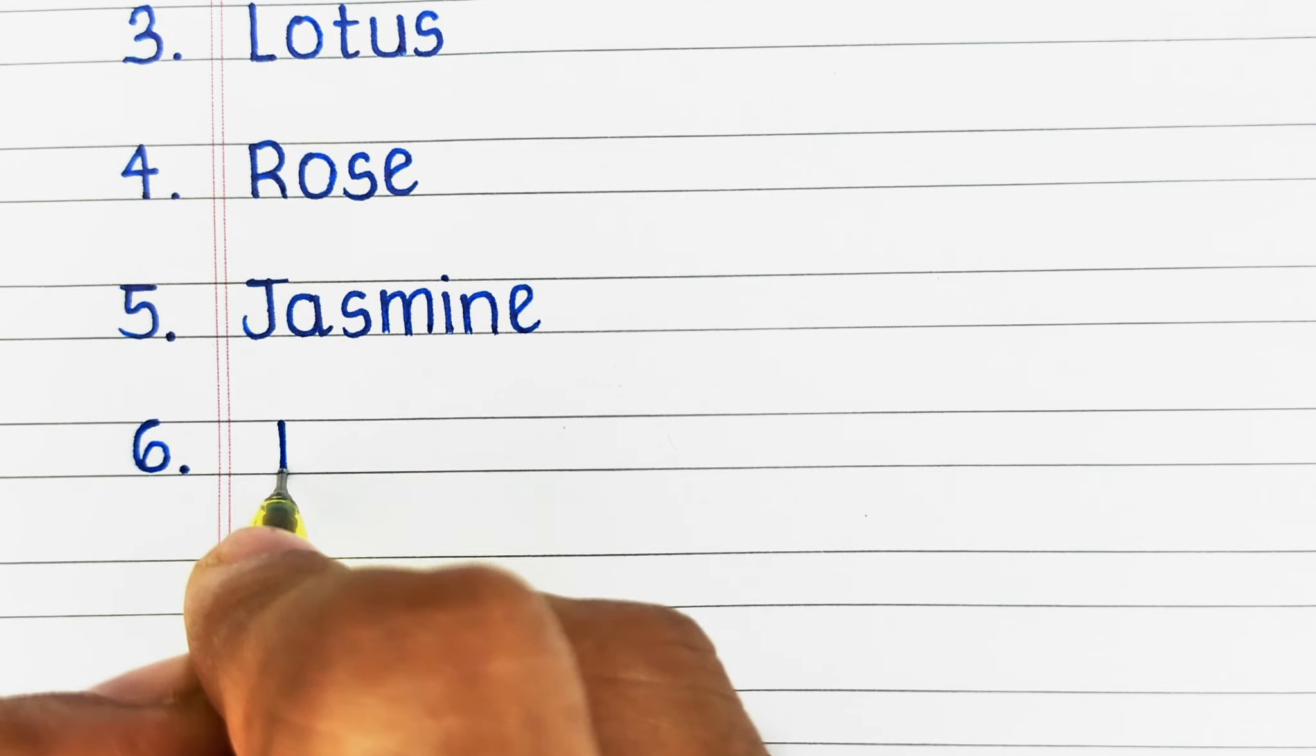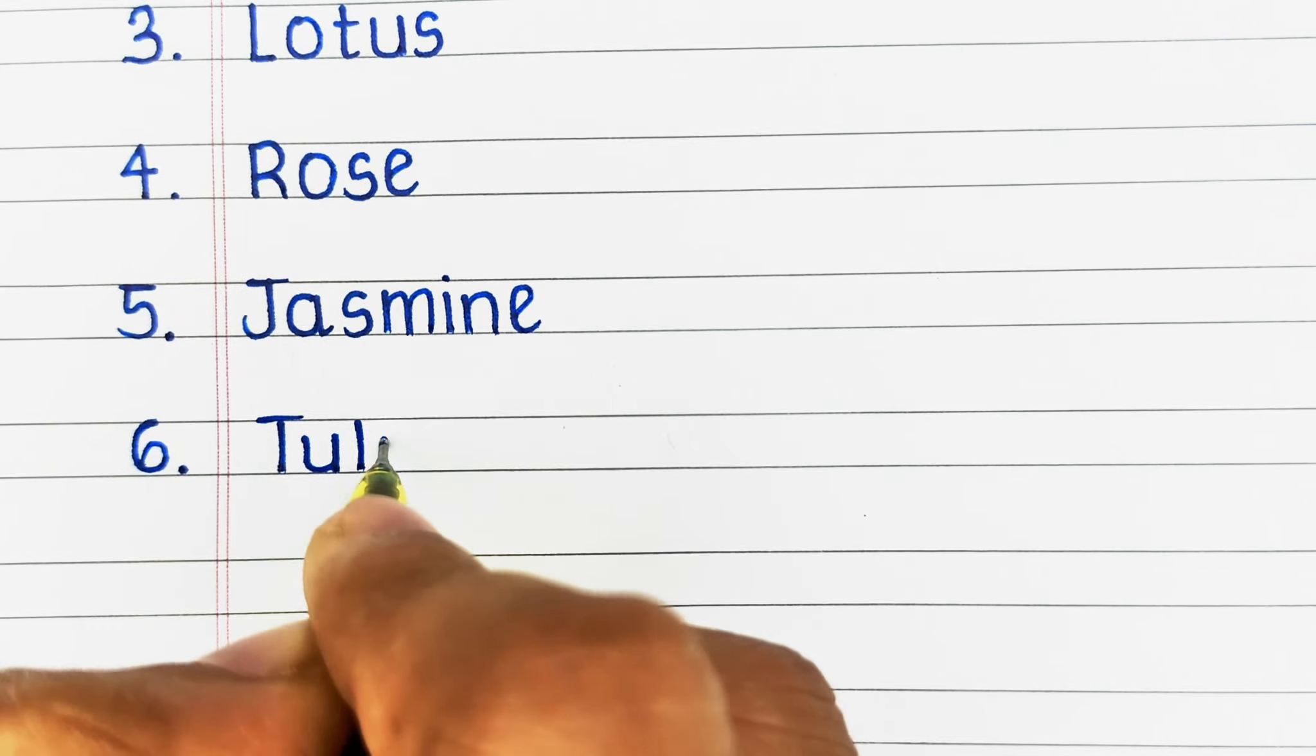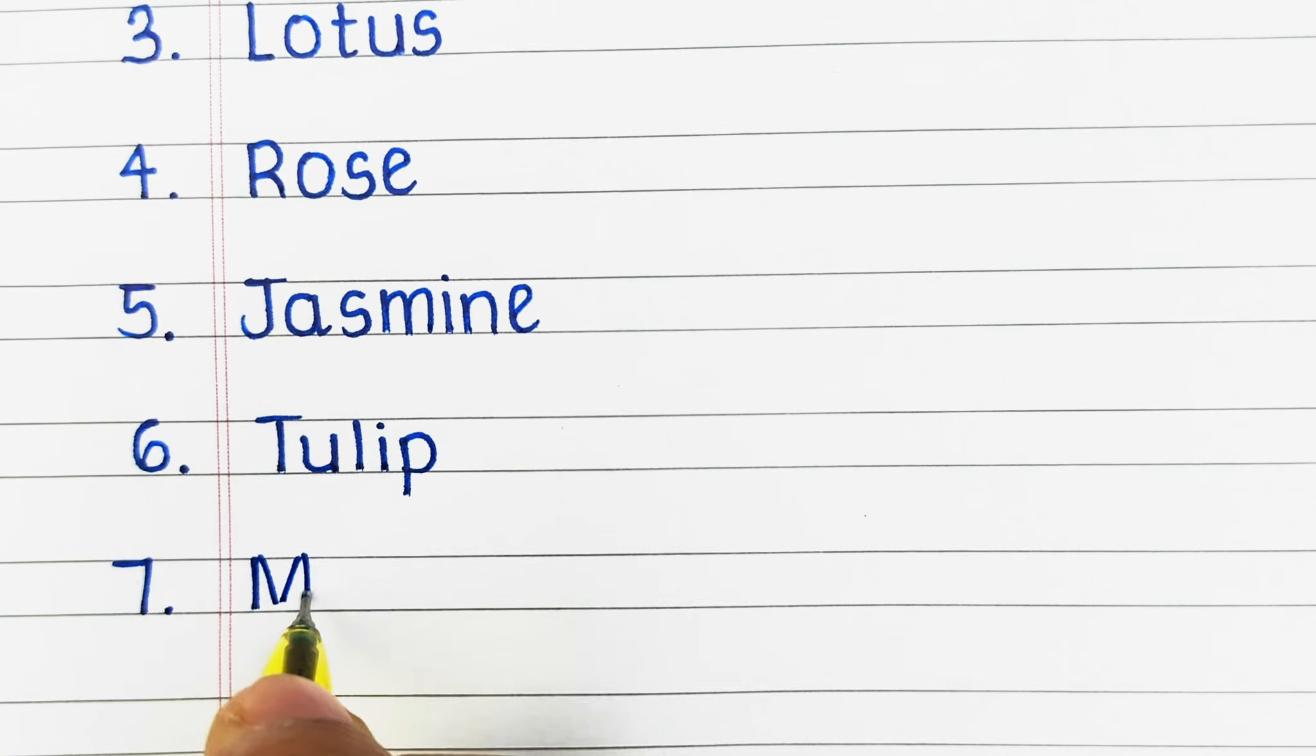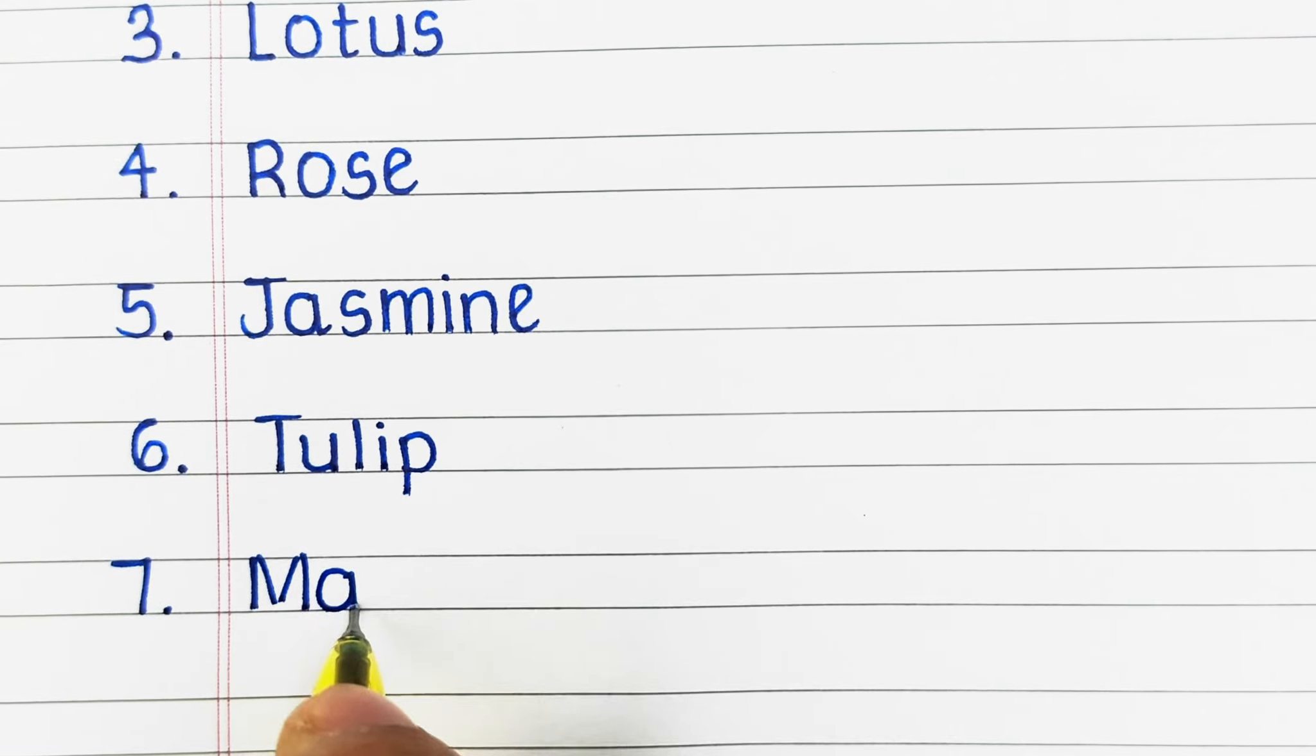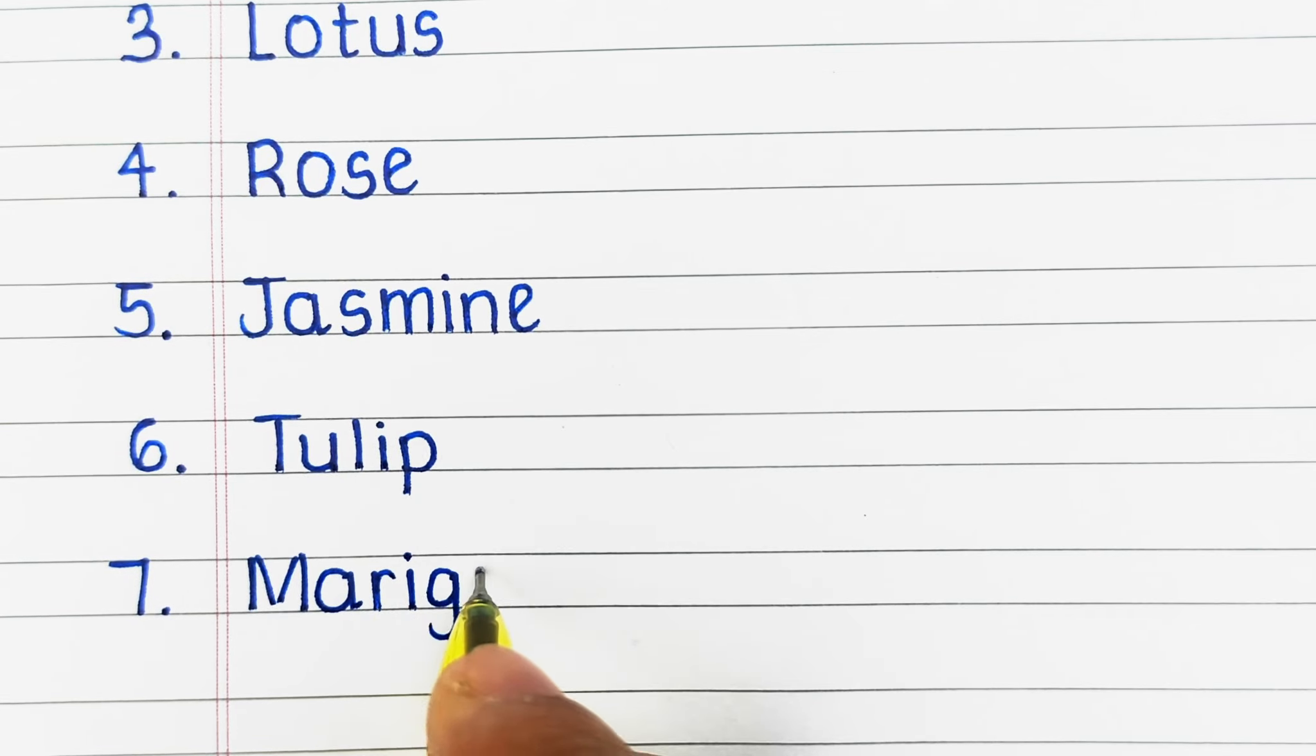Sixth one is T-U-L-I-P, Tulip. Seventh one is M-A-R-I-G-O-L-D, Marigold.